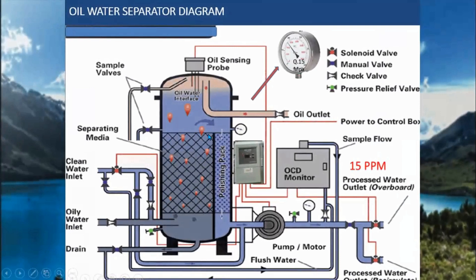Here is the oily water separator diagram. You can notice the inside of what is called the coalescing pack, where there is an oil-water interface. The upper part contains oil based on specific gravity, while the lower part is water.